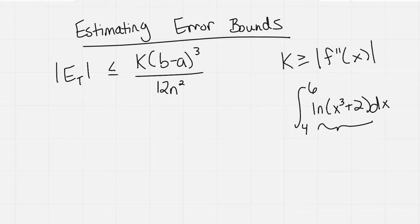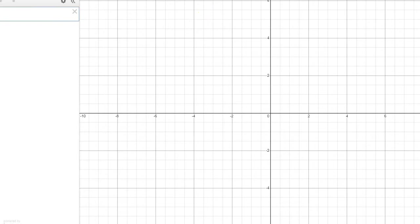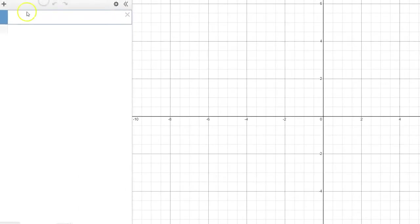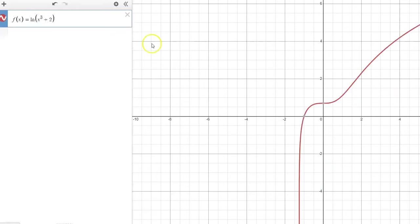So if we go to Desmos and we enter in the function, you want to enter it in as f of x, not y. f of x equals natural log of x cubed plus 2, and we get our function.